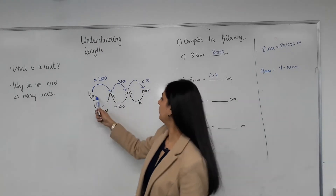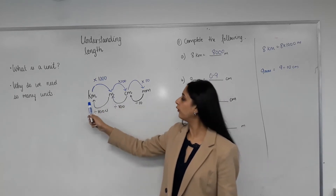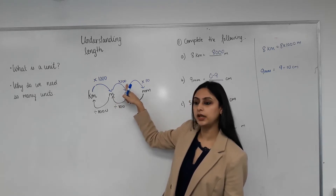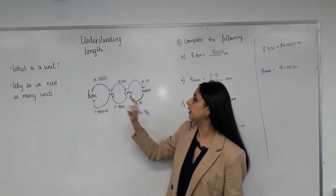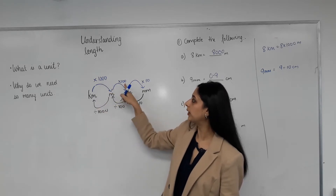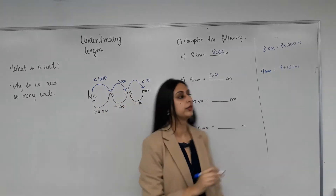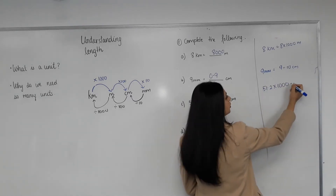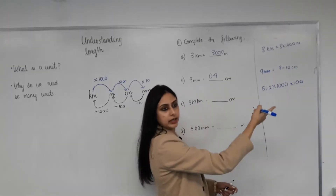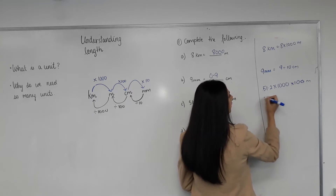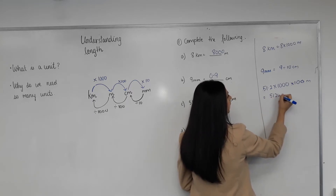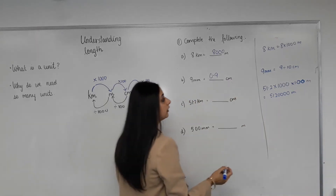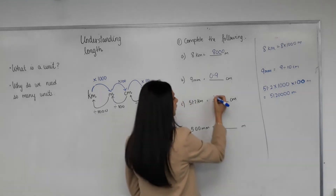Kilometers to centimeters — now, kilometers to centimeters, there's meters in between. So to go from kilometers to meters, we times by a thousand. Then from meters to centimeters, we times by a hundred. So how many zeros do you reckon you'll have to multiply with from kilometers to centimeters? Three plus two? Five. So it'll be 51.2 times — one, two, three zeros. Basically, you're multiplying it by a thousand first and then a hundred, which gives you five zeros overall.